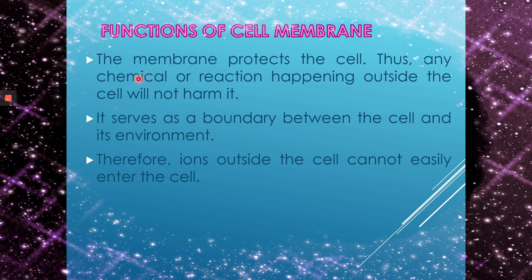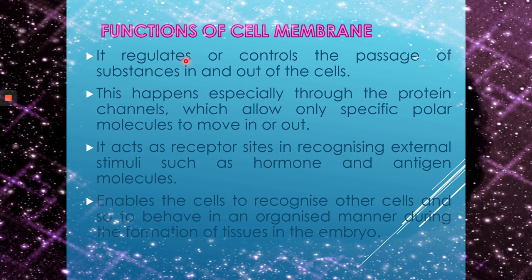The functions of the cell membrane: the cell membrane protects the cell so that any chemical or reaction happening outside will not enter it. It serves as a boundary between the cell and the environment, so ions outside cannot enter. The cell membrane also regulates the passage of substances in and out of the cell through protein channels, which allow only specific polar molecules to move in or out. It also acts as a receptor site for internal stimuli such as hormones and insulin, and enables cells to recognize each other for organized tissue formation.